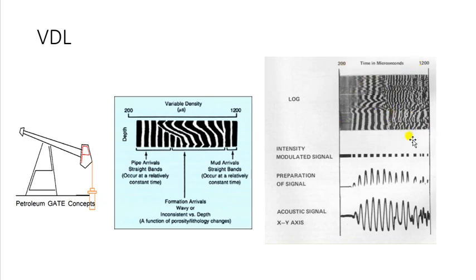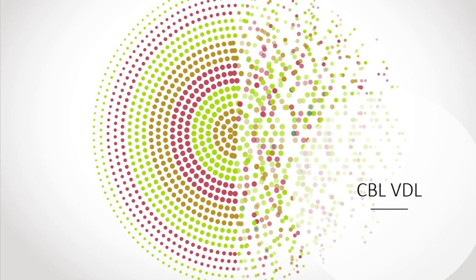The interpretation of the CBL log is still controversial. There is no standard API scale to measure the effectiveness of the cement bond. There are many other factors which can lead to false interpretation.